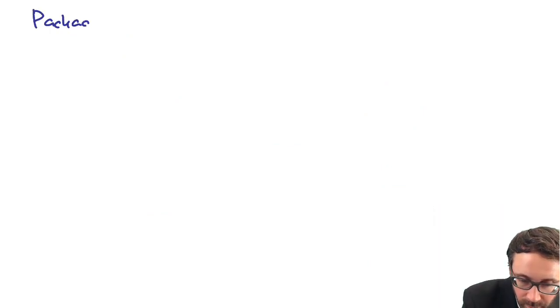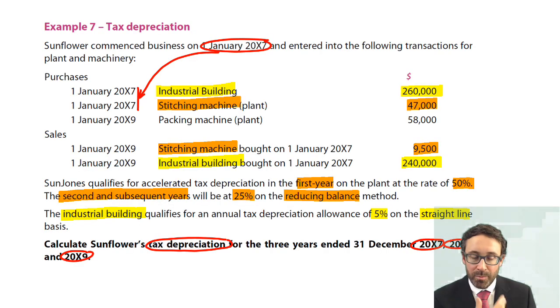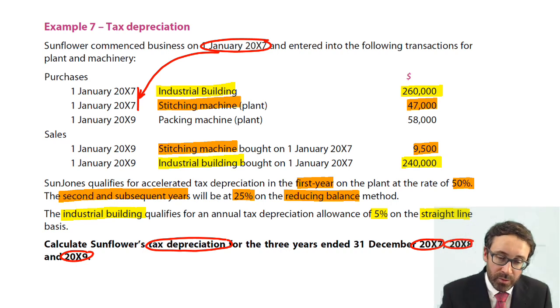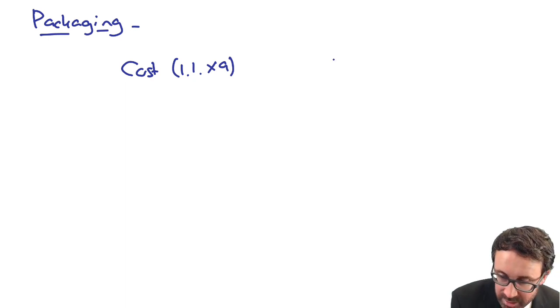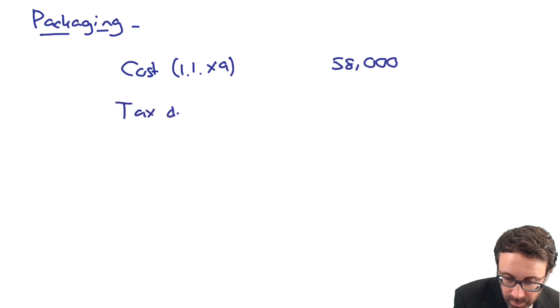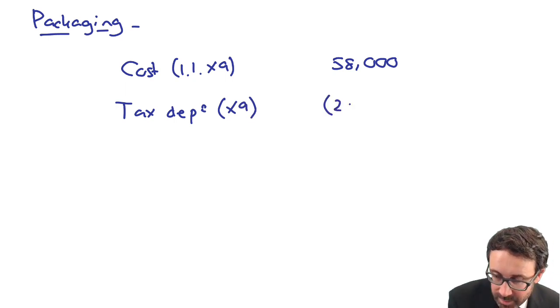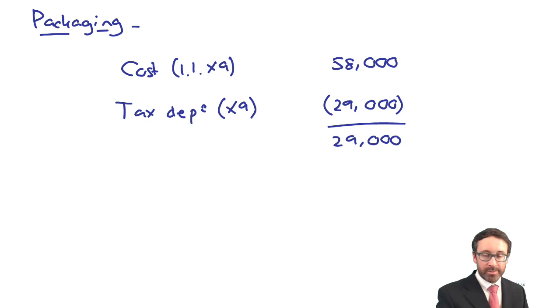Just to finish it off, there's not a lot really happening with the most recent purchase, that packaging machine. All that happens is you buy it at the start of January X9. We go through there and charge tax depreciation of 50% in the year. So you've got your cost on the 1st of the 1st X9 at $58,000. My tax depreciation for the year X9, half of that is $29,000. There we go. Excellent.